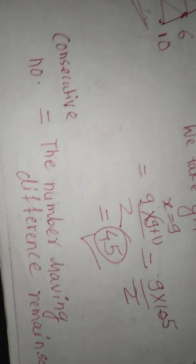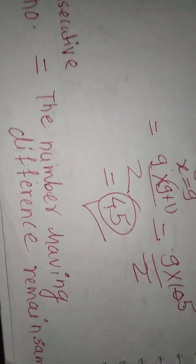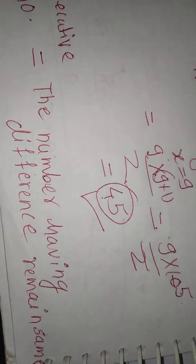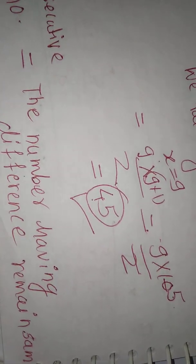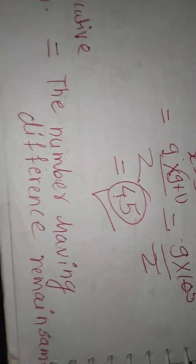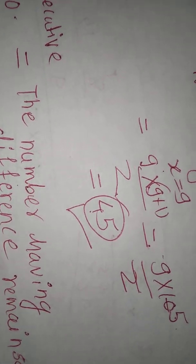What is consecutive number? Consecutive number is nothing but only the numbers having difference remaining the same. Numbers for which the difference or gap is the same, no change. That is called a consecutive number. Means 21, 22, 35, 36, 49, 50, that is consecutive number. Means difference is 1.